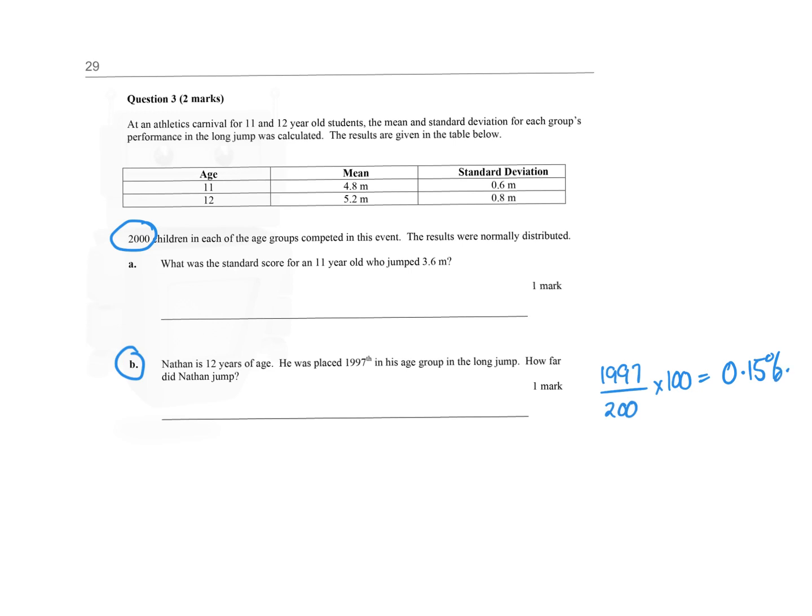Now, because they've told you that this is normally distributed, you know you have the bell shape again, and you know that Nathan, because he's sitting up here in the top 0.15%—oh sorry, actually, I take that back. He's actually in the bottom, because he came 1997 out of 2,000. So he's actually in the bottom 0.15%.